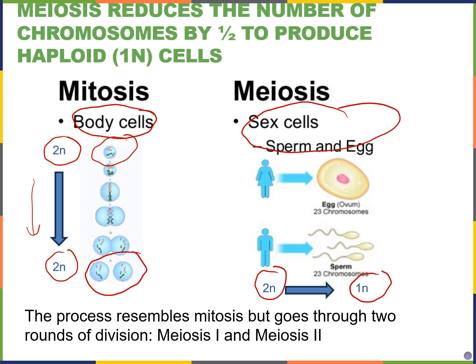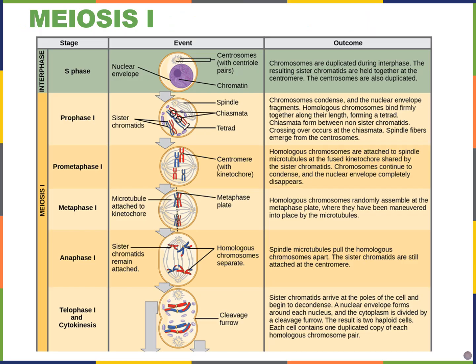The reason we end up with this reduction in chromosome number is because meiosis actually goes through two rounds of division. We start with one cell and end up with two cells for the first division. Then in meiosis II, we go from two cells to four cells. This summary figure from the book covers each of these phases, which we'll go through in detail in the next few slides.